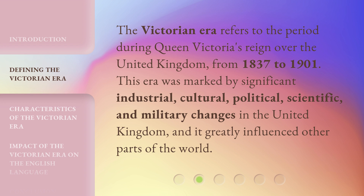The Victorian era refers to the period during Queen Victoria's reign over the United Kingdom, from 1837 to 1901. This era was marked by significant industrial, cultural, political, scientific, and military changes in the United Kingdom, and it greatly influenced other parts of the world.